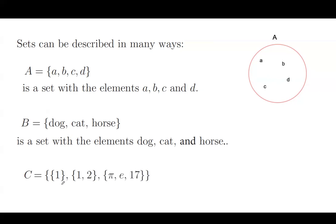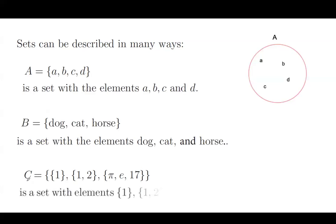Another set — we can make it more interesting — is a set which includes other sets. So set C includes a set containing one, a set containing one and two, a set containing pi and a peer number, and 17. But still, this set C has three members.